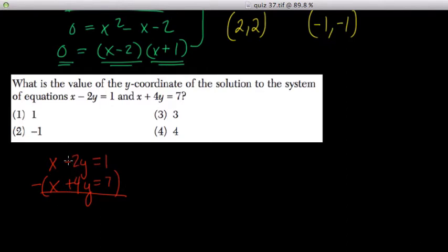x minus x is 0, negative 2y minus 4y is negative 6y, and 1 minus 7 is negative 6.